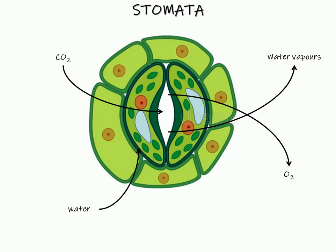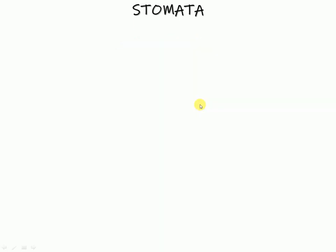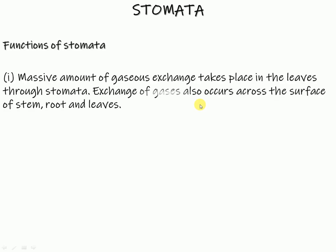I think you are now able to understand the process of photosynthesis easily. Let us move towards some functions of stomata. First, a massive amount of gaseous exchange takes place in the leaves through stomata. The exchange of gases occurs across the surface of stem, roots, and leaves.